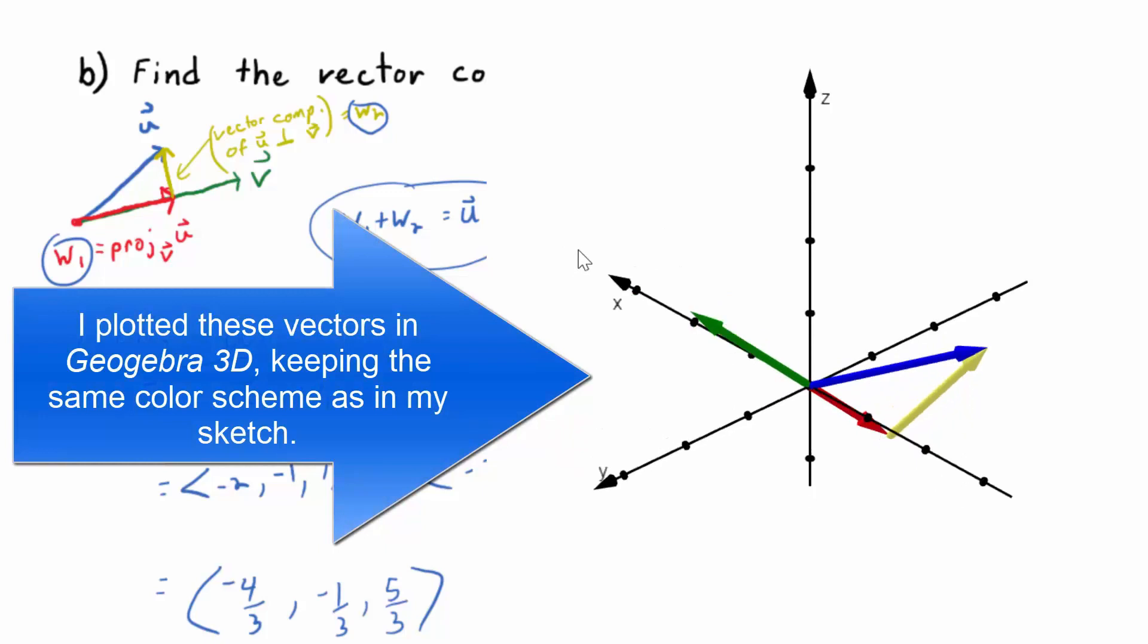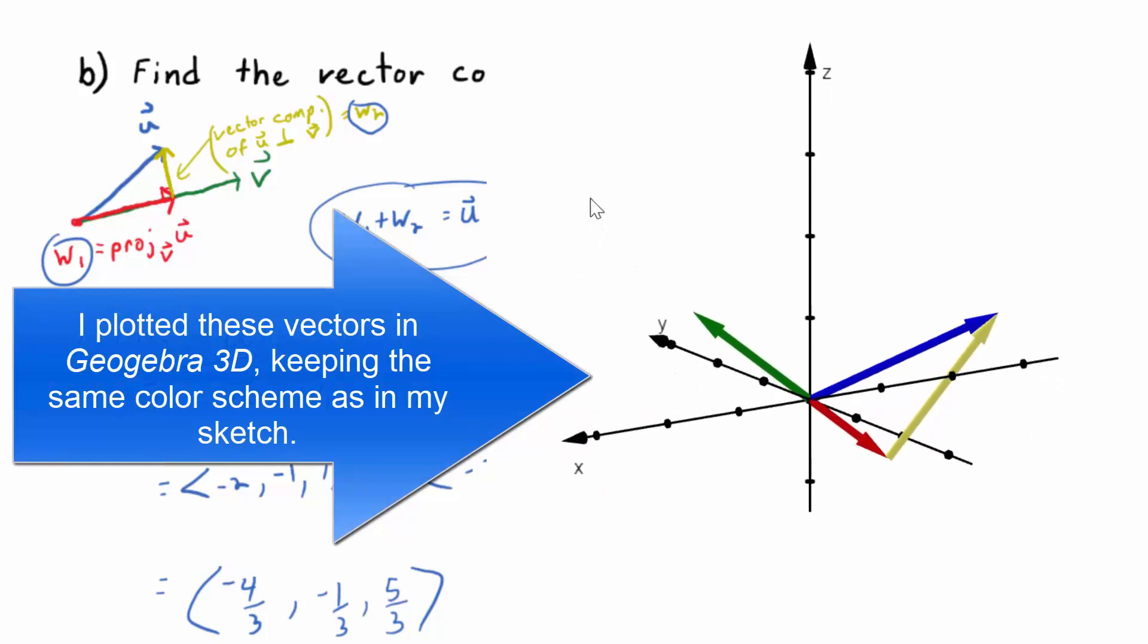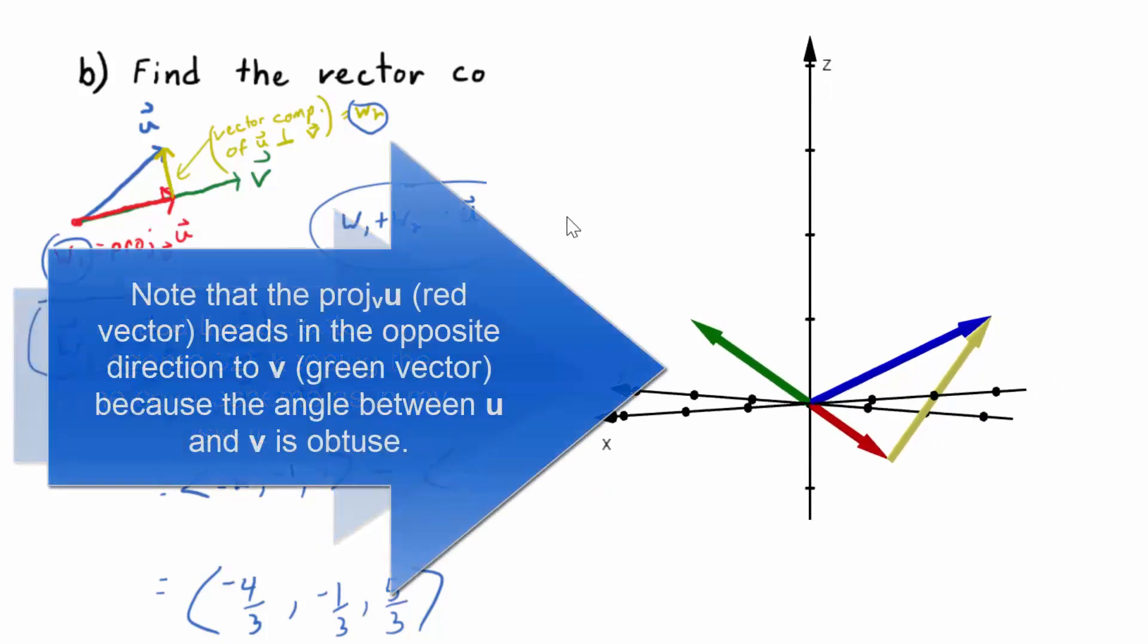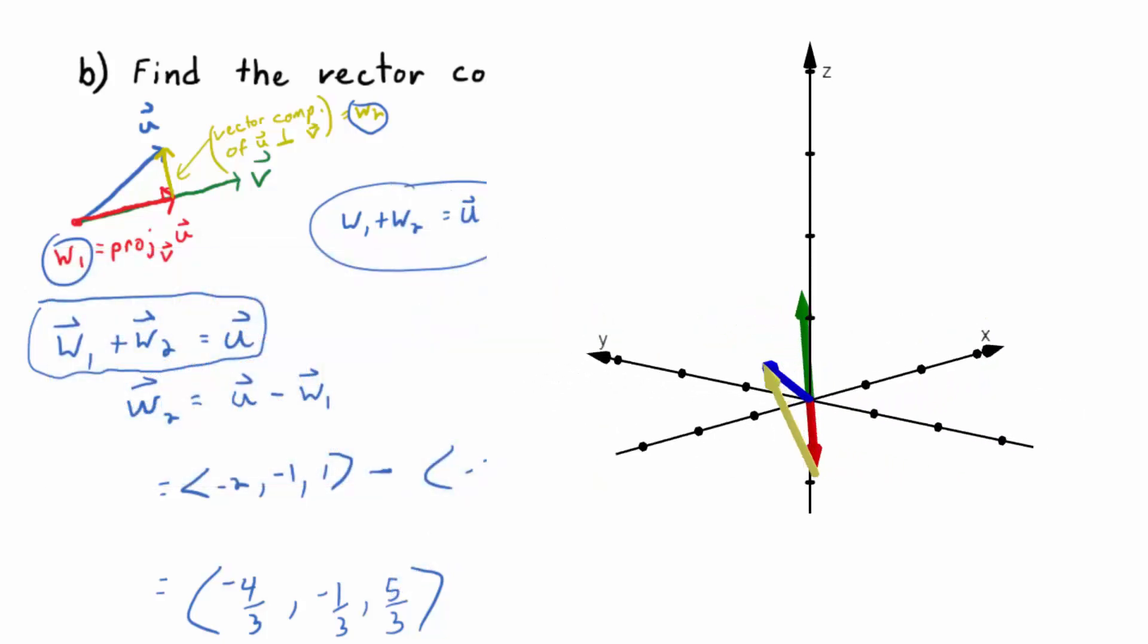And if you were to get some graph paper out and graph both w1, we found in part a, w2 we just found, and then the original vector, and, you know, graph u, graph v, graph w1, graph w2, you will get a picture that looks like that. You have to draw everything to scale and be very careful, but it will work.